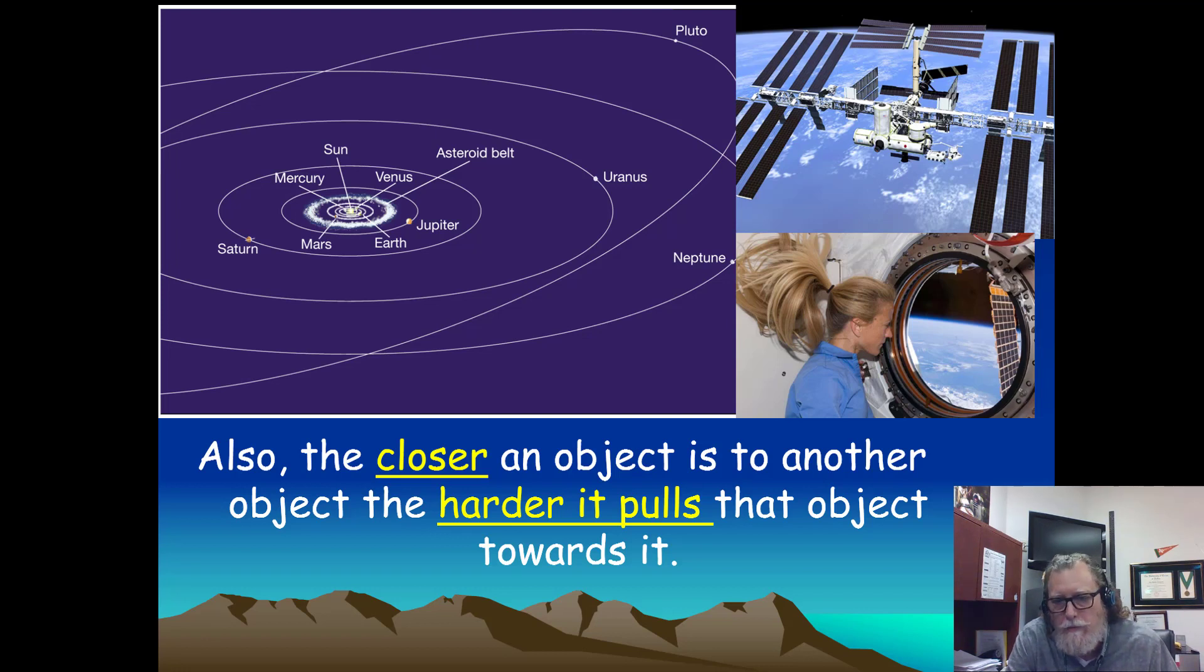So the closer an object is to another object, the harder it's going to pull that object towards it. That's called proximity.